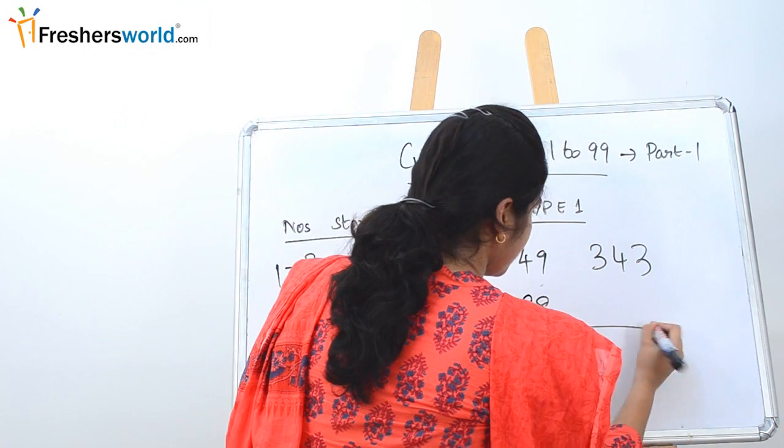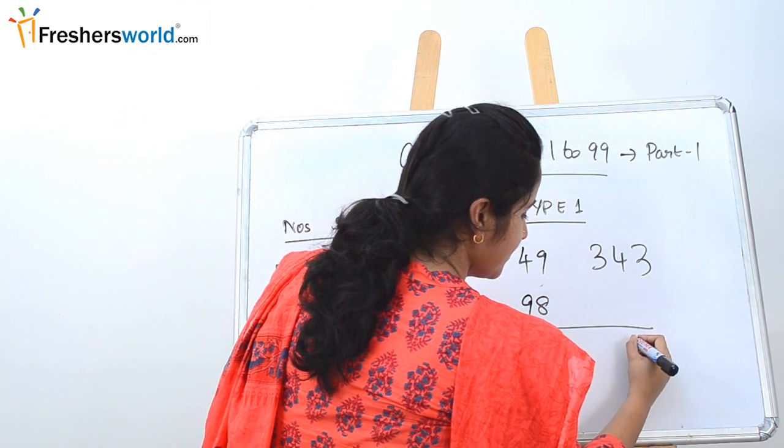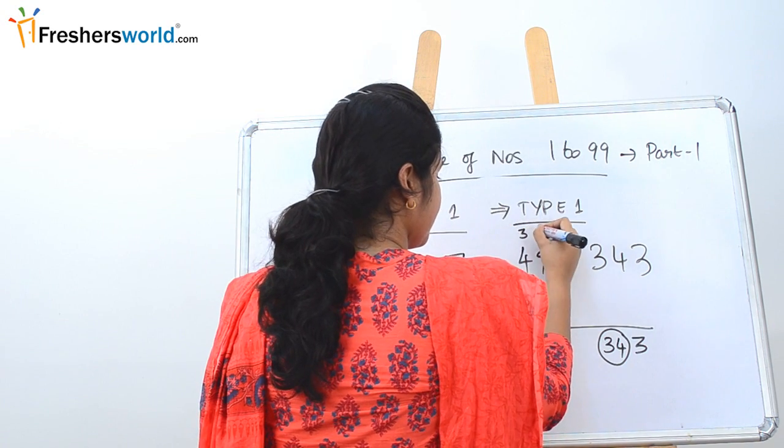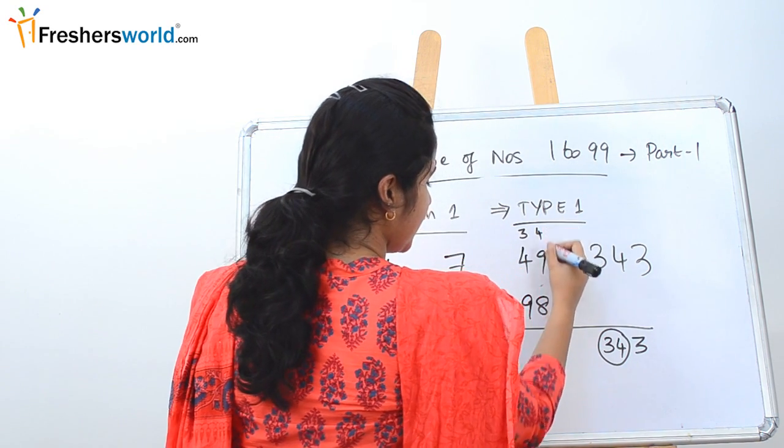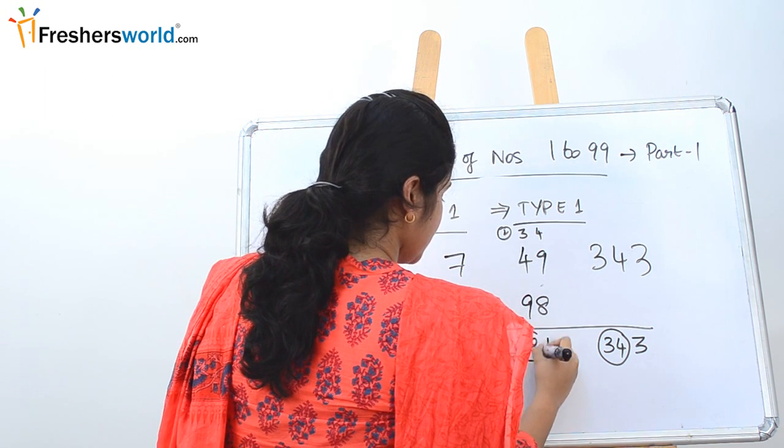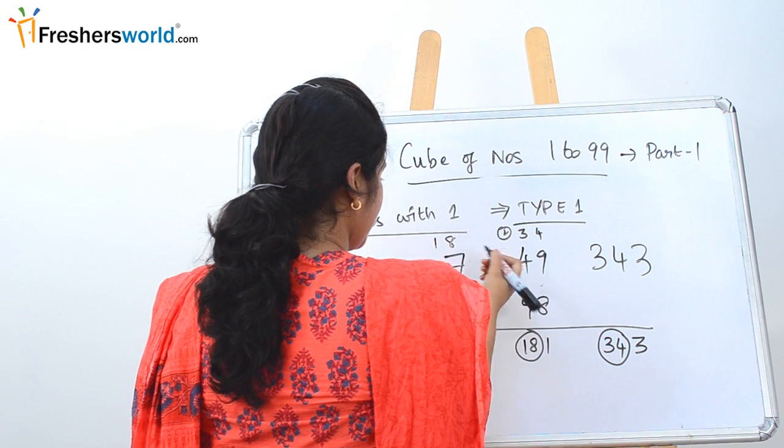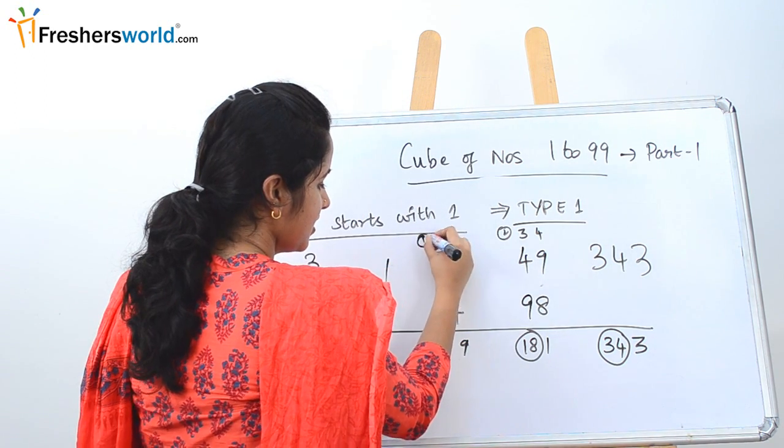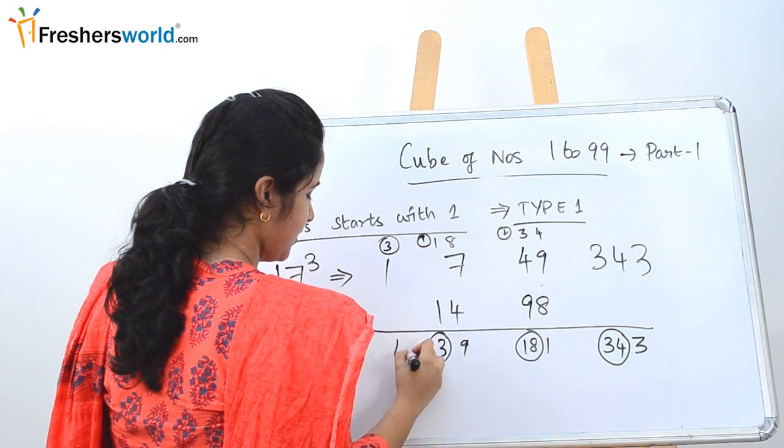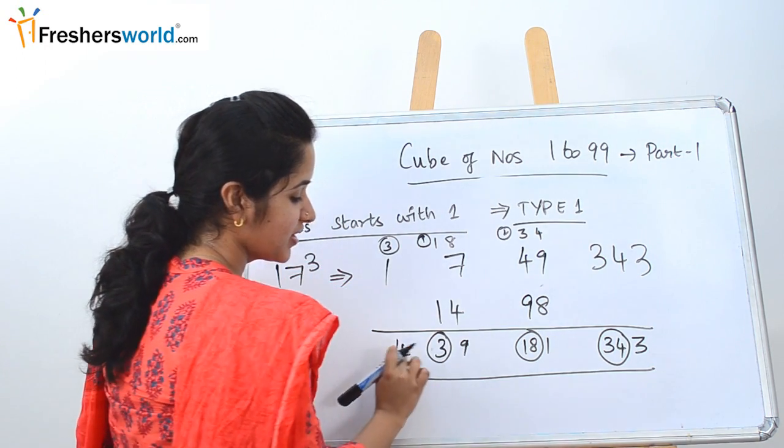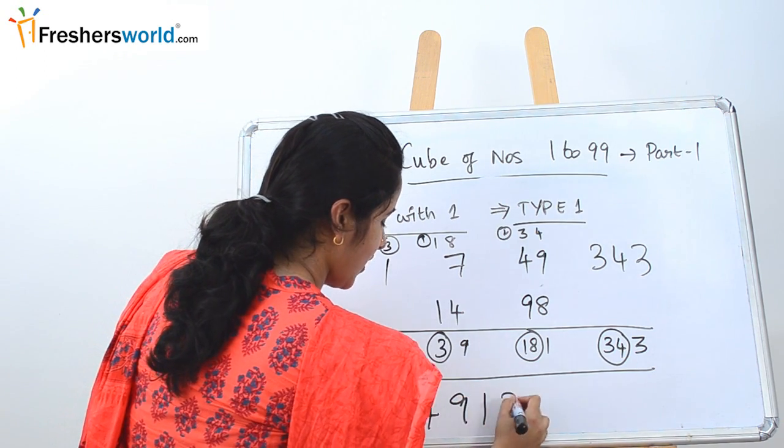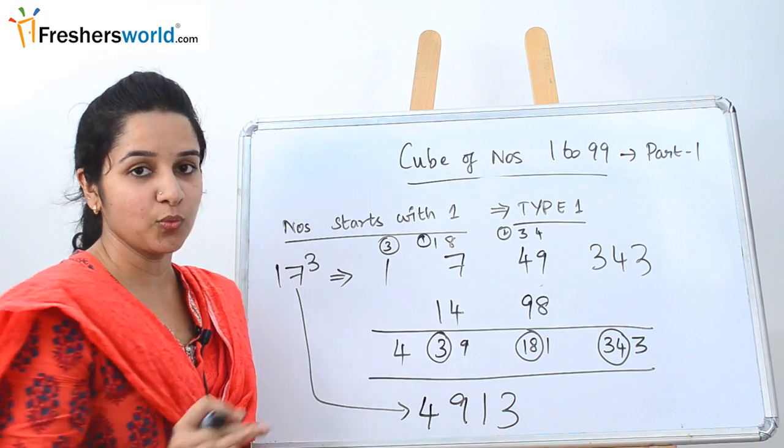As such, the last digit will be here. So 34 you can carry over here. 9 plus 4 is 13, plus 1 is 21, so 2, 5, 9, 18. This 18 will be carried over here: 15, 19, 1 carry over here, so 3. 3 will be taken here, which is 4. What is the value? Nothing but whichever is not circled. So 4, 9, 1, 3. So 17 cube is 4913.